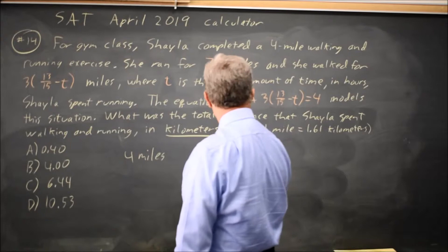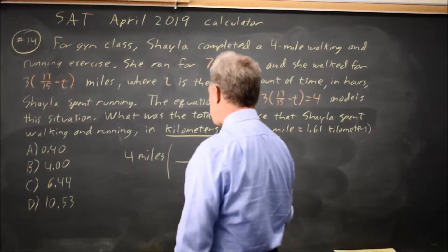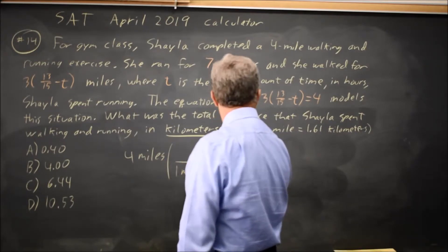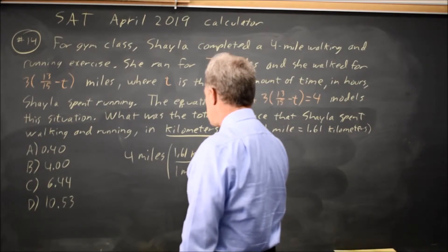We can either do this with ratios or multiplying by fractions that are equal to one. I want to cancel the miles, so I'm going to put one mile in the denominator and 1.61 kilometers in the numerator.